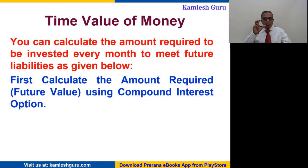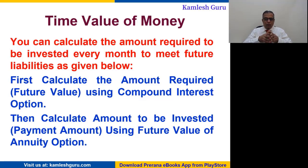Now let us see the reverse calculation — you can calculate the amount required to be invested every month to meet a future liability. First use the compound interest option to calculate the amount required, then calculate the amount required to be invested using the future value of annuity option. For marriage provision, the current expenses are five lakh rupees. Calculate the future value considering inflation, and once you arrive at the amount required, calculate the periodic payment needed to achieve that target.